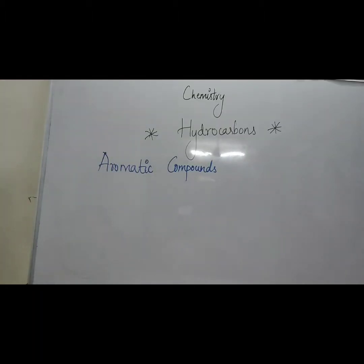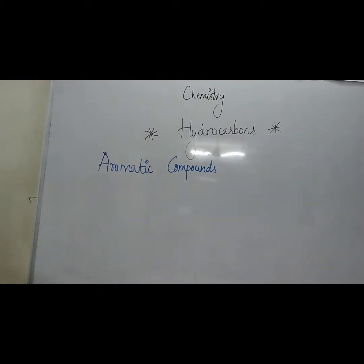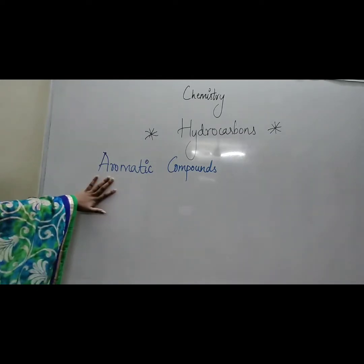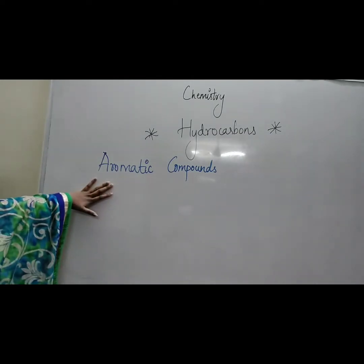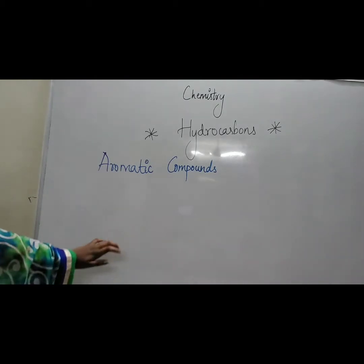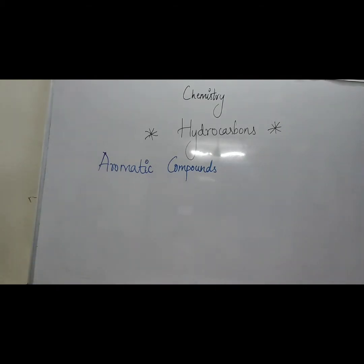Let's check the basic definition of aromatic compounds. Whatever compounds we have naturally obtained, like resins, blossoms — these are natural products. They have a pleasant smell. The word 'aroma' is also called smell — a pleasant smell is what the aroma word describes. Whatever compounds come under this are called aromatic compounds.